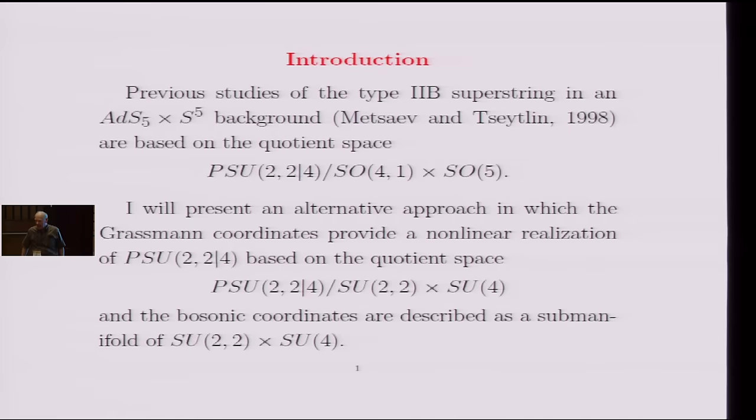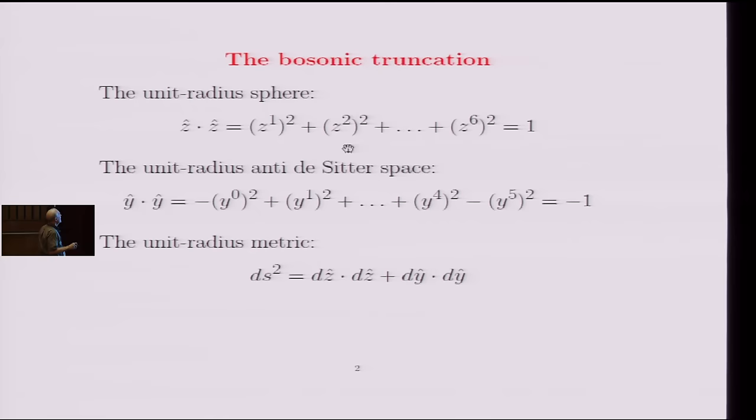And then afterwards, we'll add in the bosonic coordinates. And these bosonic coordinates, which is the 10-dimensional AdS5 times S5 geometry, will be described as a submanifold of the Lie group SU(2,2) times SU(4). So that's the idea.